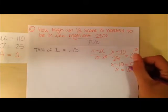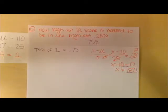And 127 is your final answer. So in order to score in the highest 25% or the 75th percentile, you must score at least 127 on the IQ test.